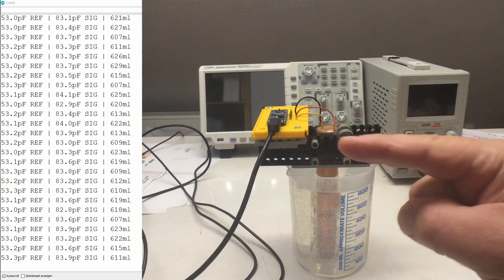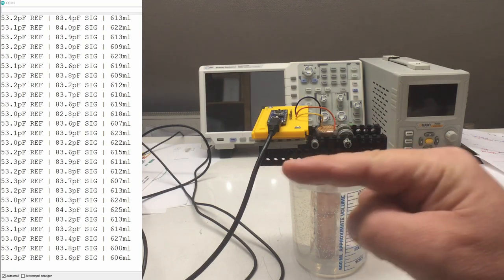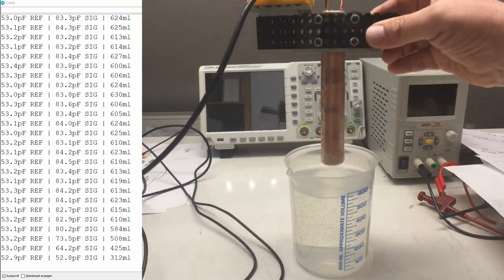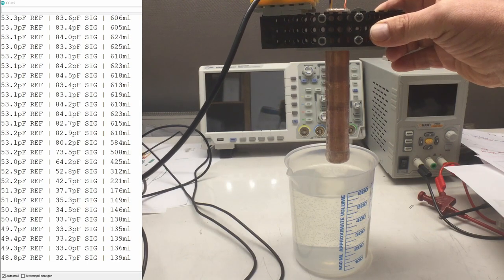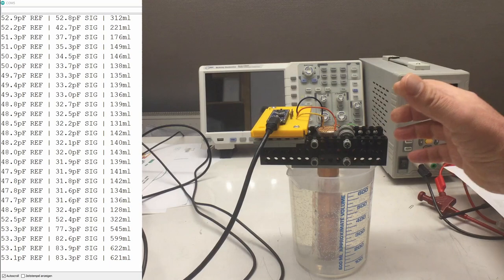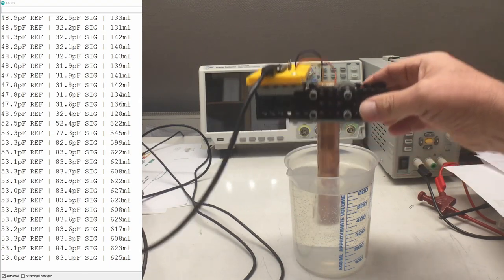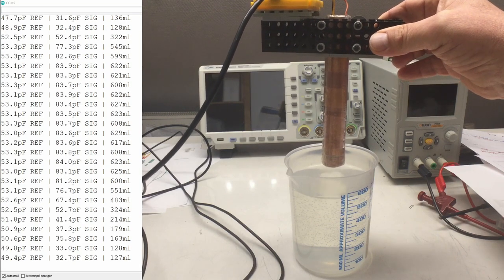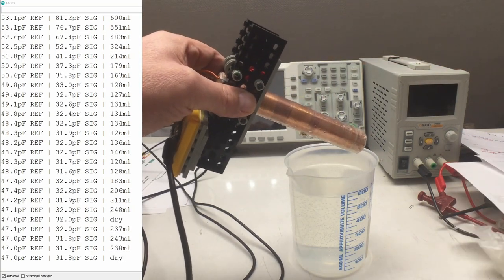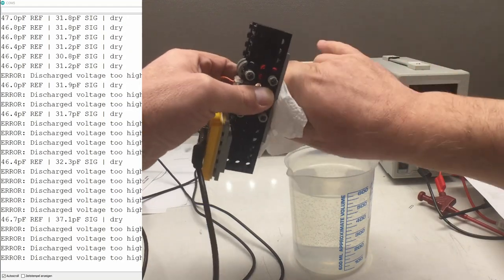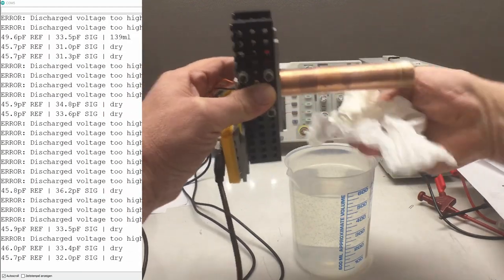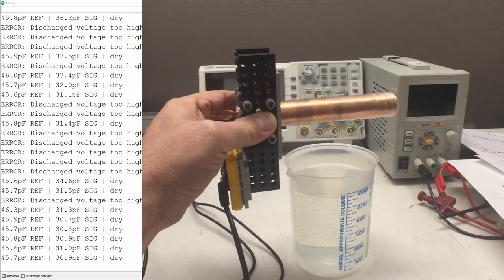Another oddity. Please observe the readings of our microcontroller while I take the sensor out of the container. You see something? The values are dropping only very slowly and they stay quite high. I'm putting it back in. We're about 600. I'm taking it out and we're dropping only very slowly and staying far, far above dry. And I can only reach dry when I really dry the sensor manually.